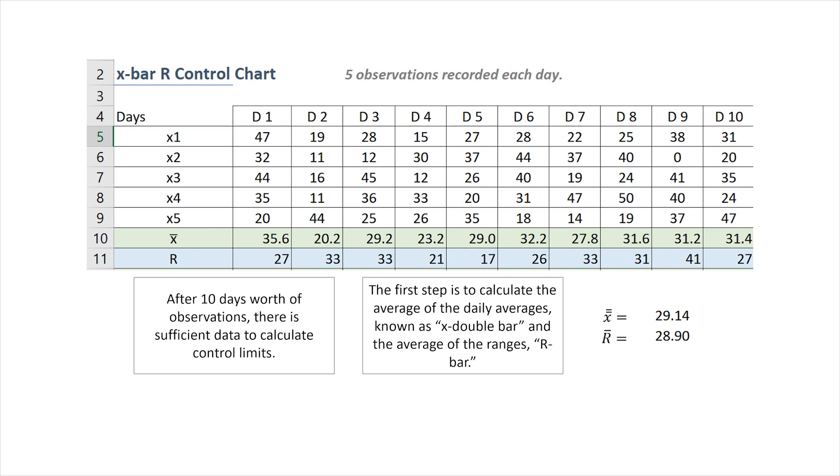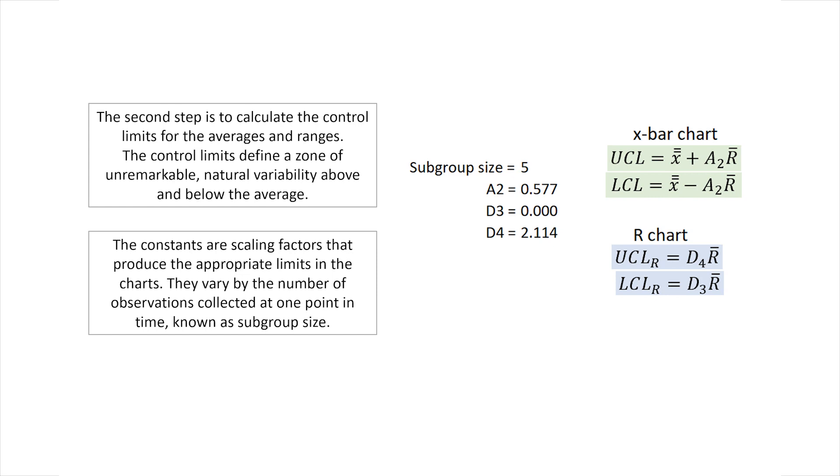Observe that to calculate the limits which define the range of natural variation day to day, we use the intraday variability, which gives us a measure of the stability of the process. The second step is to calculate the control limits for the averages and ranges. The control limits define a zone of unremarkable natural variability above and below the average. Notice the constants used in the formulas: a2, d3, and d4.